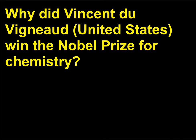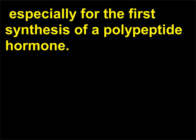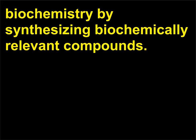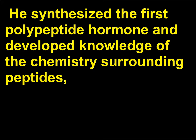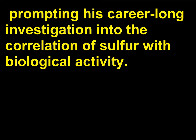For his work on biochemically important sulfur compounds, especially for the first synthesis of a polypeptide hormone. Du Vigneaud was known for bridging the fields of organic and biochemistry by synthesizing biochemically relevant compounds. He synthesized the first polypeptide hormone and developed knowledge of the chemistry surrounding peptides, especially those containing sulfur. In early experiments on the posterior lobe of the brain, du Vigneaud had noted the high percentage of sulfur present, prompting his career-long investigation into the correlation of sulfur with biological activity.